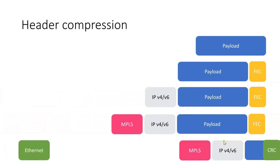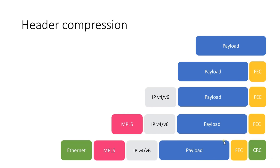The third technique is header compression. In 4G RAN, the basic data unit is the PDU — Packet Data Unit — which passes through the TCP/IP stack: application layer, transport layer, network layer, data link layer, and physical layer. Whenever the PDU crosses each layer, it is encapsulated by the corresponding protocol — for example, at the network layer it is encapsulated with IPv4 or IPv6 headers, and at the data link layer with an Ethernet header.